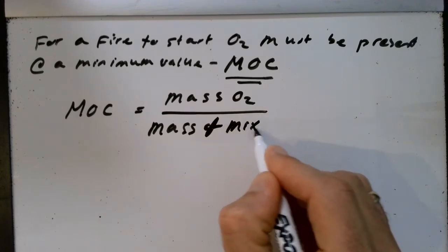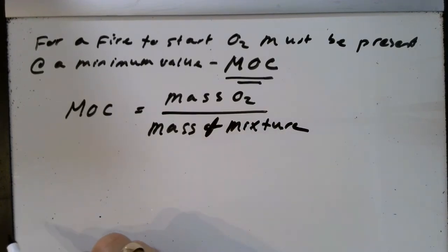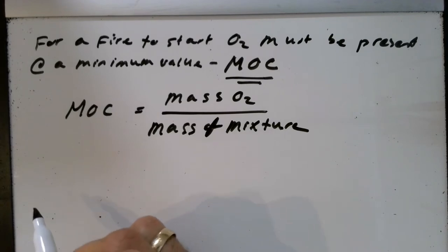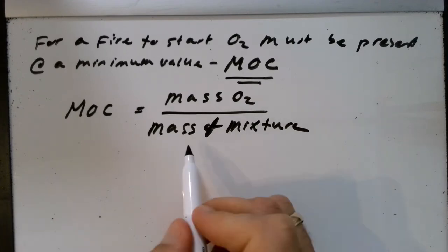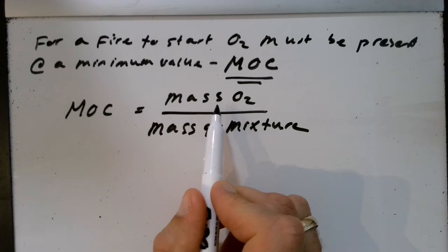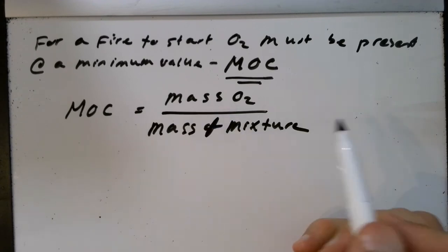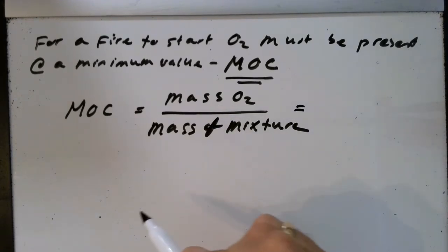The MOC is going to be equal to the mass of oxygen divided by the mass of the mixture in which we want to see a combustion or an explosion. This will include the rest of the air. So if I'm trying to burn methanol, I need the amount of methanol plus the amount of air in the denominator, and the minimum amount of oxygen in the numerator. I can multiply by 100 to get a percent.